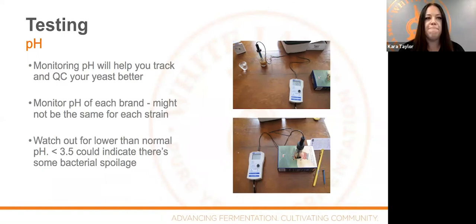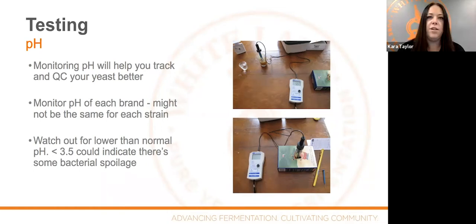We also see pH rise as yeast is dying. That's why at the end of fermentation you usually see the pH rise a little bit. You can also measure the pH of your yeast slurry — if you're using it within the first couple of weeks and the pH is rising, you'll often have a lot of dead cells there.